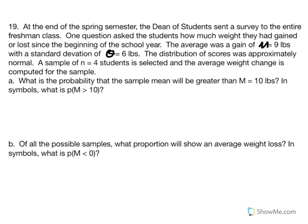Number 19: at the end of the spring semester, a dean sent a survey to the freshman class asking how much weight they gained or lost since the beginning of the school year. The average was a gain of 9 pounds with a standard deviation of 6 pounds, approximately normally distributed. A sample of 4 students is selected — what is the probability the sample mean will be greater than 10 pounds?